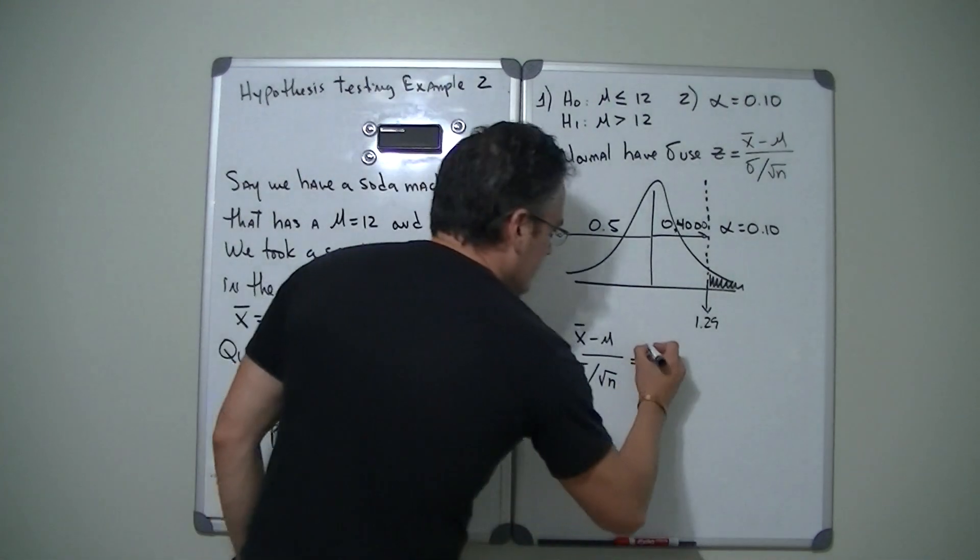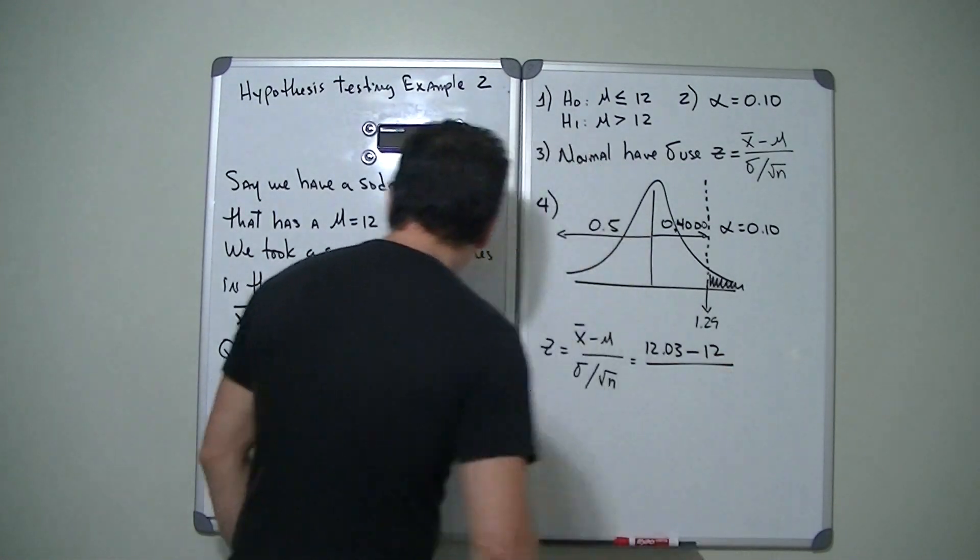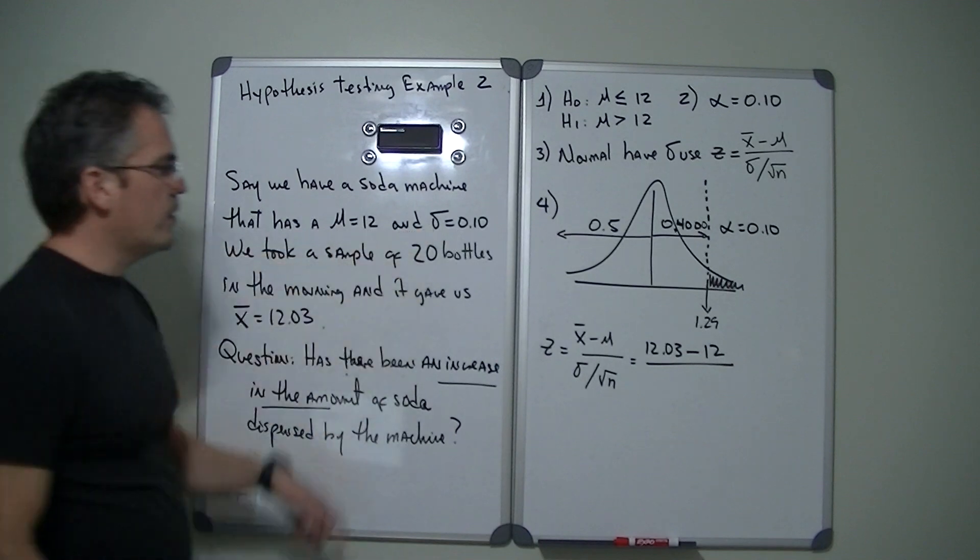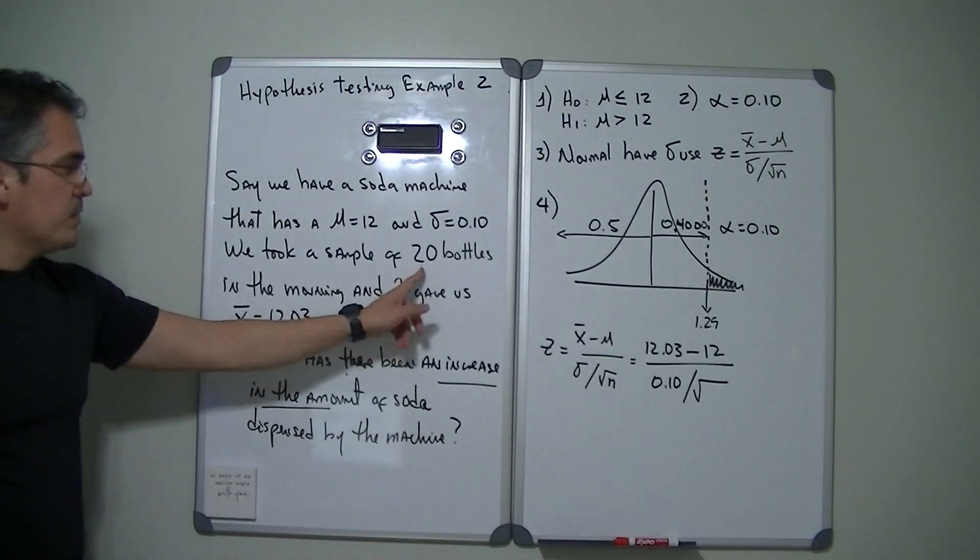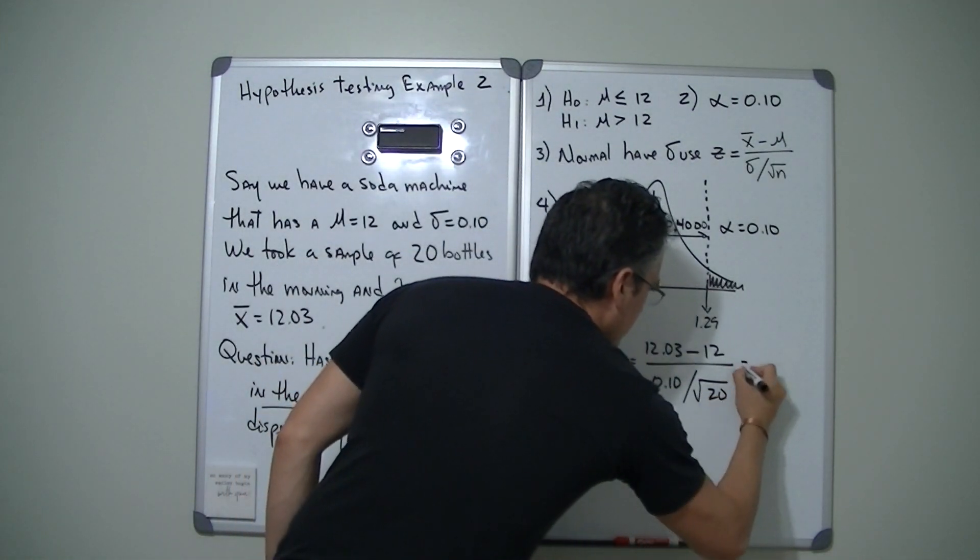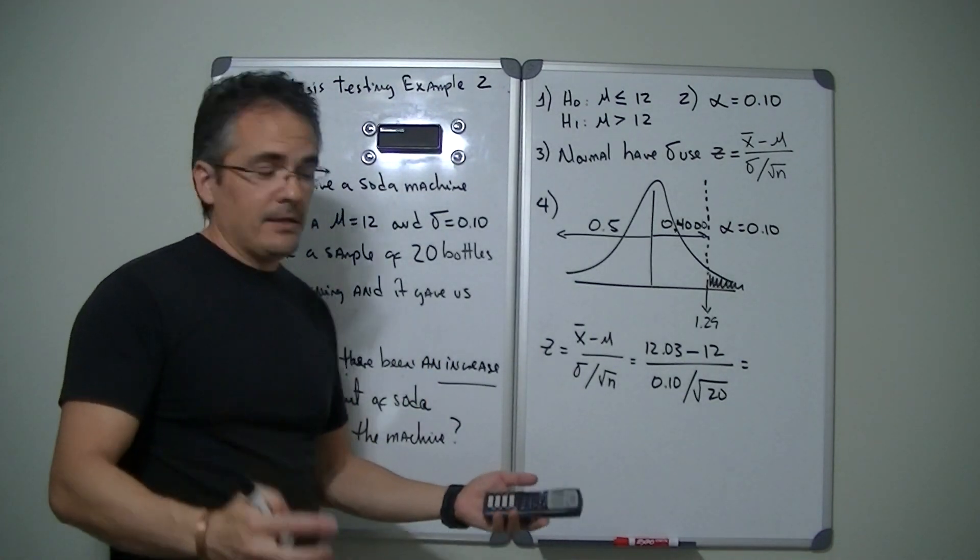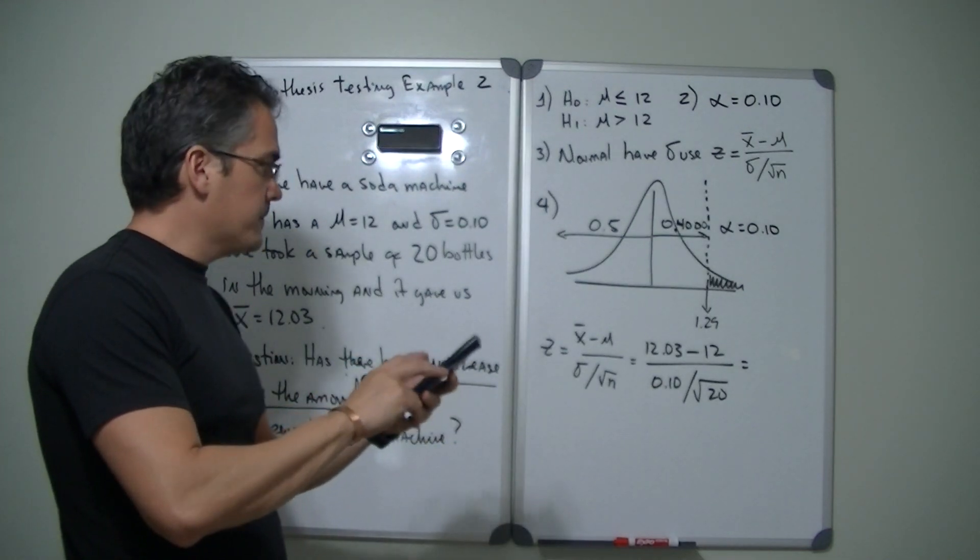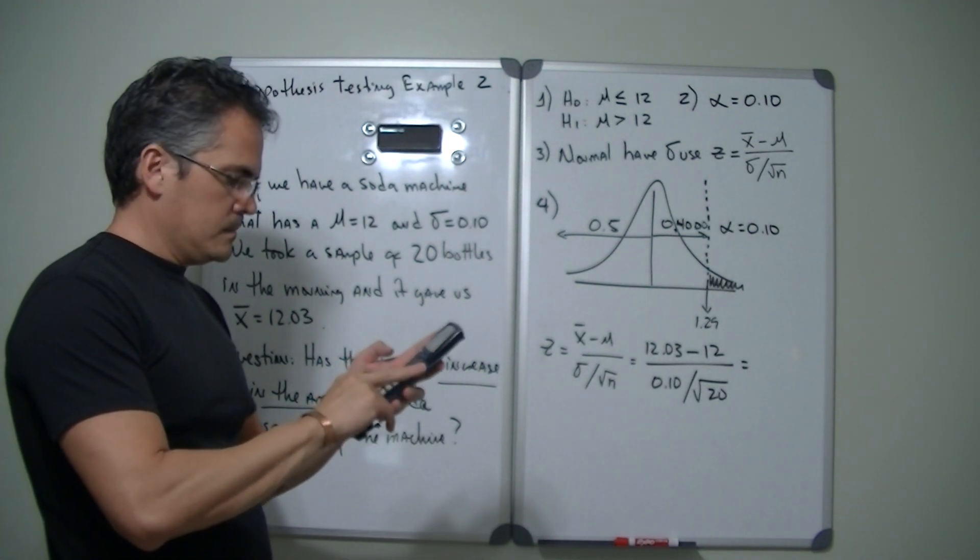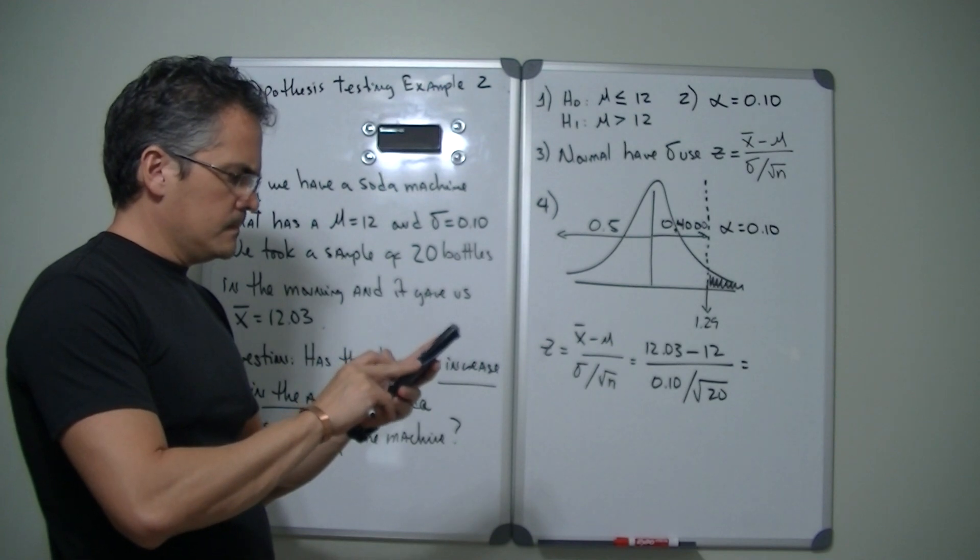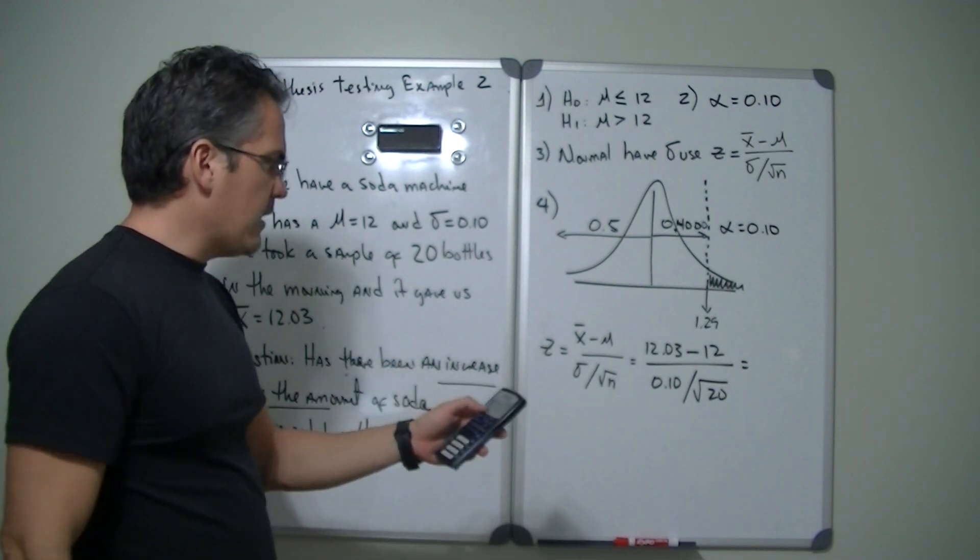Our x bar is 12.03, our mu is 12, then we have our sigma which is 0.10, and then we're going to divide that by square root of sample size which in this case is 20. And even though it would be great if I can do that in my head I can't, so let's plug it and hit this baby. All right, I got 1.34.